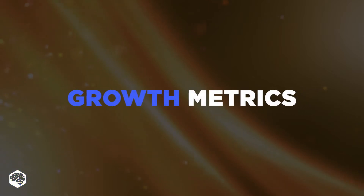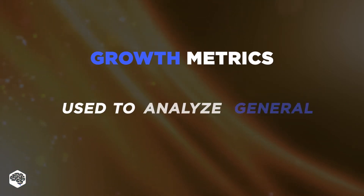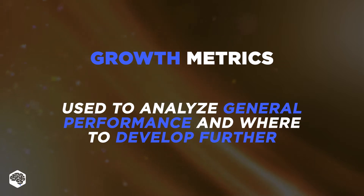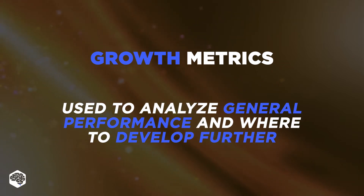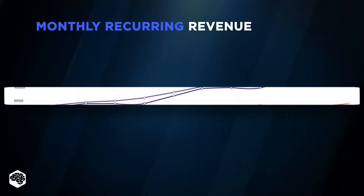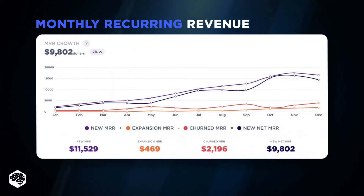The first group is Growth Metrics. We use them to quickly get information about general performance and where to develop further. So let's see which metrics we suggest tracking. First, Monthly Recurring Revenue, which shows recurring revenue per month and is one of the vital metrics that should be tracked in SaaS reporting.